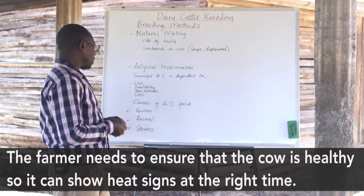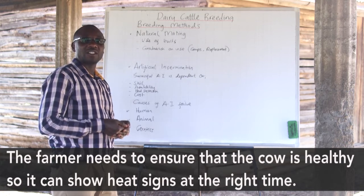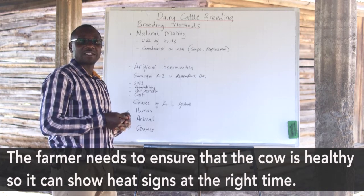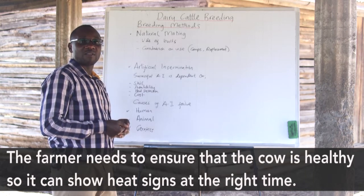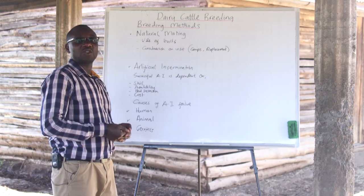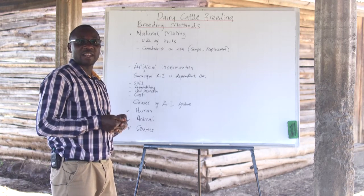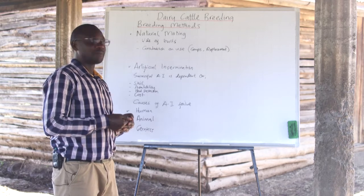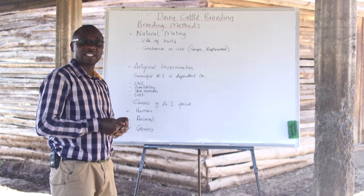Another cause of AI failure is the animal itself. The animal may not show heat signs at the right time because of poor health, diseases, infertility, or its genetic makeup. The farmer must observe the animal from when the calf is growing up, and determine whether they need to treat the animal, provide enough feed, and meet all requirements for the cow to be able to conceive and show heat signs at the required time.